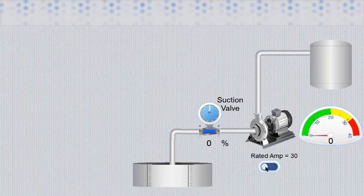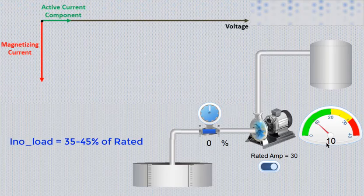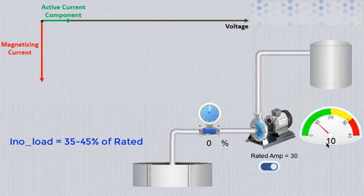When motor is turned on, then it draws 10 amperes current which is no load current. No load current of induction motor is 35 to 45 percent of full load current.